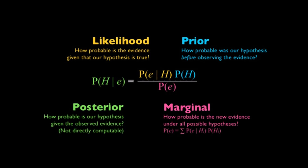Now that we've done an example, let's look at the mathematical statement of Bayes' Theorem. The green part on the left states that given evidence E, what's the probability of H? And then the right-hand side tells you how to calculate that in terms of other probabilities. Now, it's a lot easier to just do some examples, so we're going to keep doing that. But keep this in the back of your mind if you ever want to look at it in more detail.